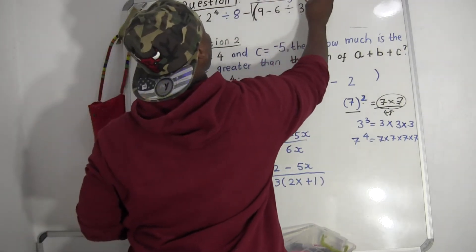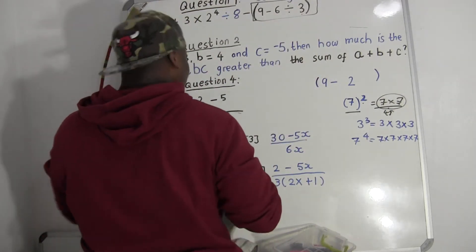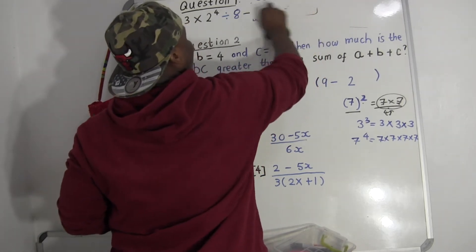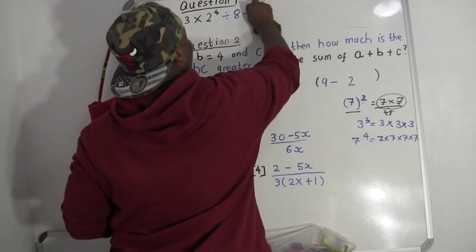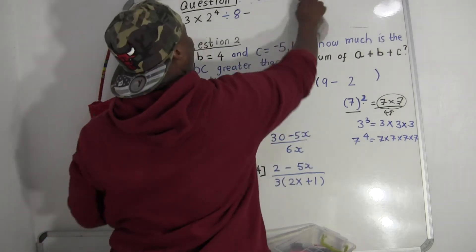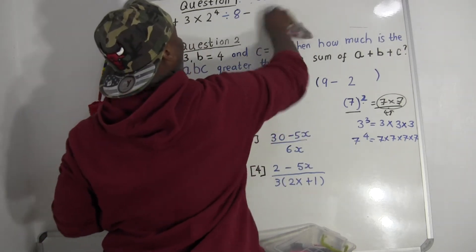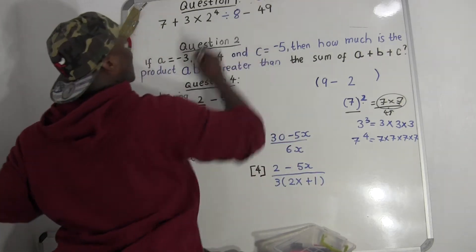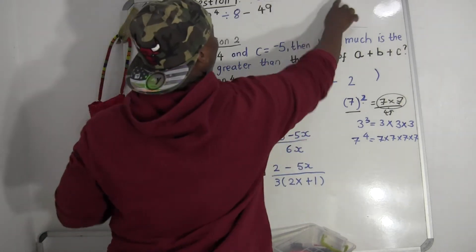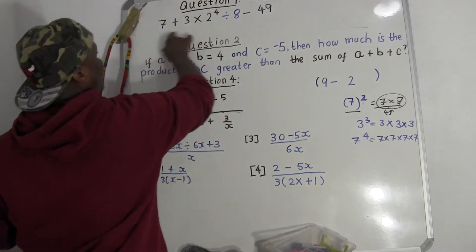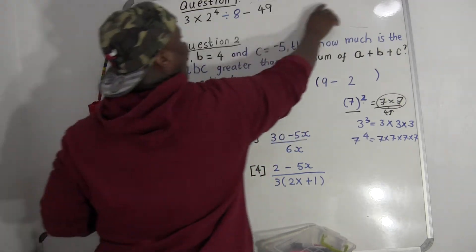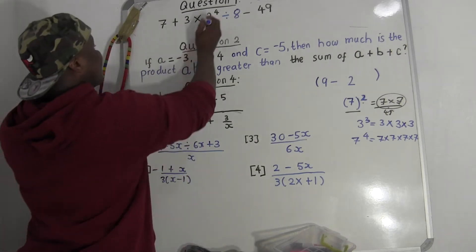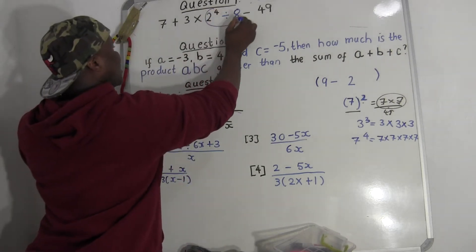I'm going to erase that and write forty-nine. So now, do you have another bracket? No. Do you have division? Yes — we have two to the power four divided by eight. What is two to the power four? Two times two times two times two: two times two is four, four times two is eight, eight times two is sixteen. So this equals sixteen.